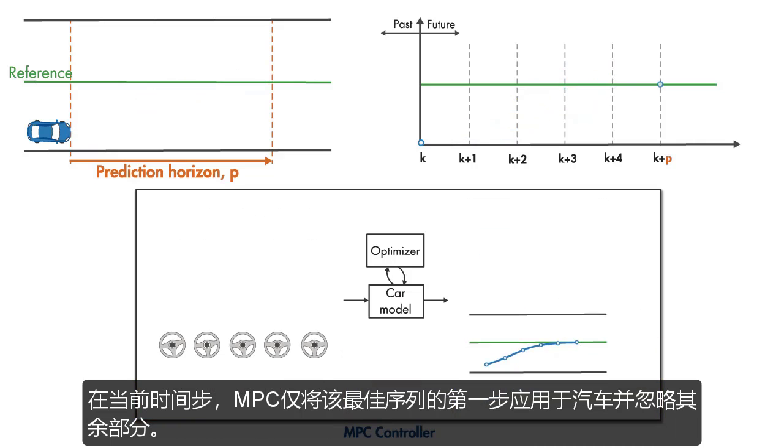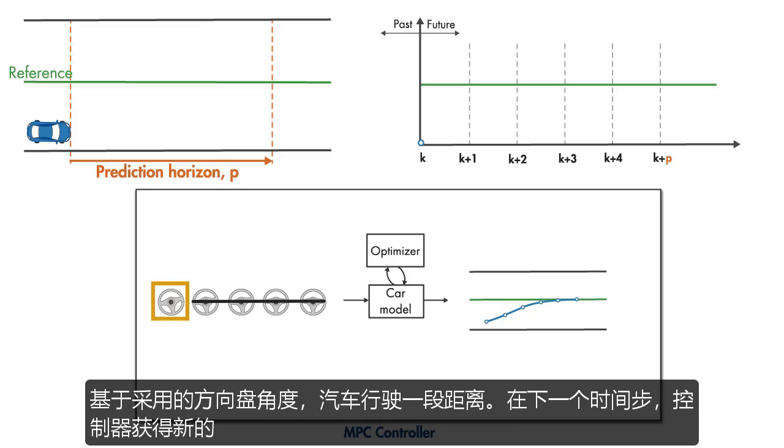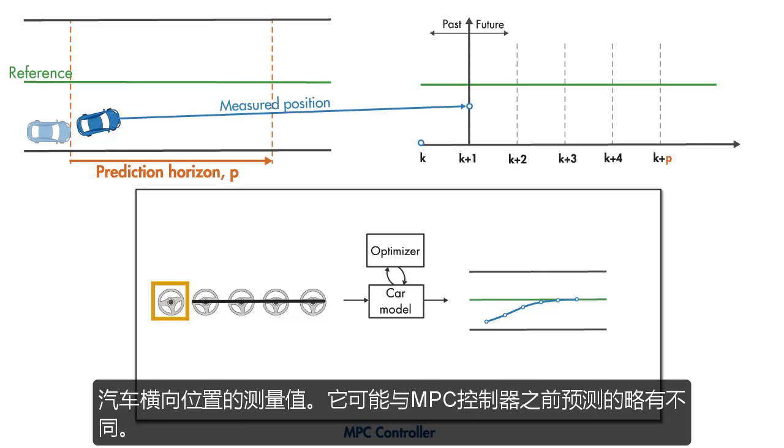At the current time step, MPC applies only the first step of this optimal sequence to the car and disregards the rest. Based on the applied steering wheel angle, the car travels some distance. At the next time step, the controller gets a new measurement of the car's lateral position.